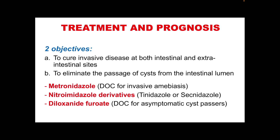For treatment and prognosis of E. histolytica, there are two objectives: to cure invasive disease at both intestinal and extraintestinal sites, and to eliminate the passage of cysts from the intestinal lumen to prevent infecting others. The drug of choice for invasive amoebiasis is metronidazole, and nitroimidazole derivatives such as tinidazole or secnidazole can also be used. The drug of choice for asymptomatic cyst passers is diloxanide furoate, which is also given after a course of metronidazole for invasive amoebiasis.